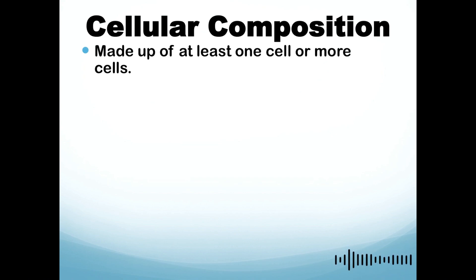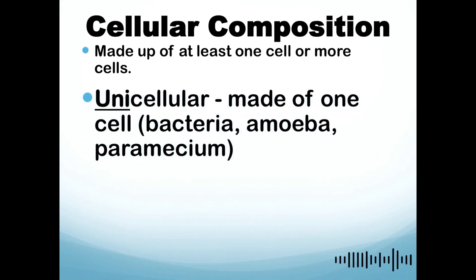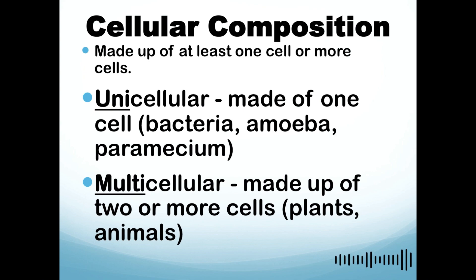We have two types of cellular composition: unicellular and multicellular. For unicellular, the word itself uni stands for one. It is made up of one cell. One good example of this is the microorganism, which is bacteria.